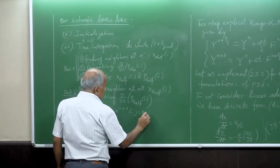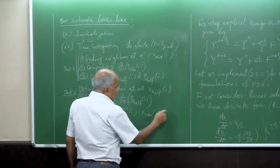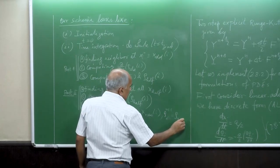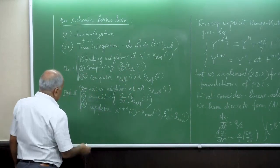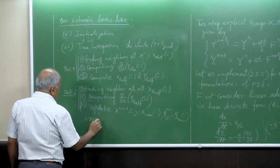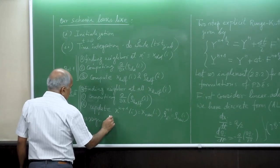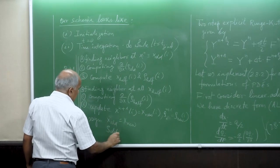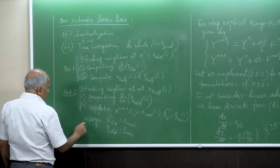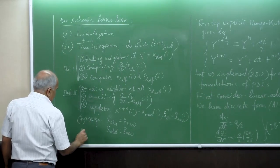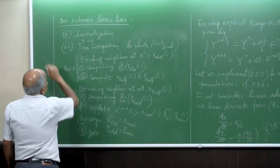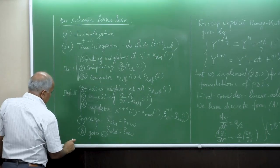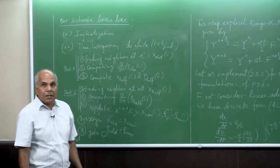Step six: once we compute the derivative rho_i^{n+1/2}, we plug that in. Then update: compute x_new (n+1 at i) and rho_new (n+1 at i). Assign: x_old = x_new, rho_old = rho_new. Then increment time t.